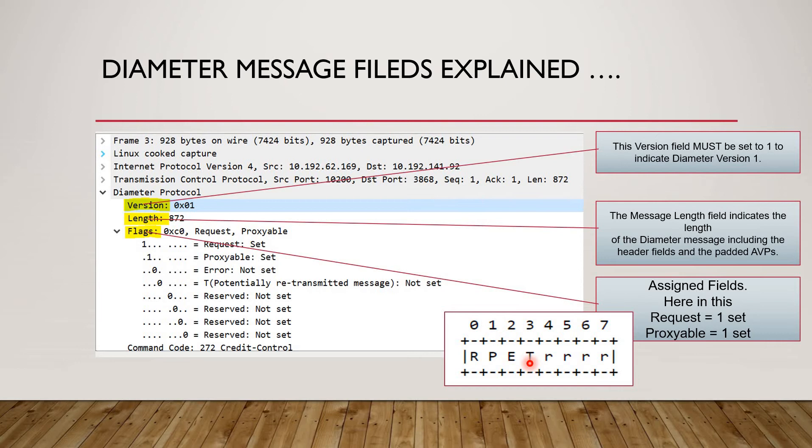This is a binary kind of field in diameter protocol header and if any of this flag is true that means it has a particular relevance. Suppose in this particular example the request flag, the request flag is set to 1. 1 means this message, this diameter message which is flowing from client to the server is actually a request message.